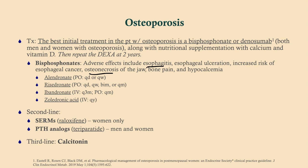Zoledronic acid (Reclast) is given once a year — convenient but more expensive. Second-line therapy includes raloxifene (women only) or PTH analogs like teriparatide (men or women). Calcitonin is third line. Denosumab is a RANK-L inhibitor that suppresses the mechanism that activates osteoclasts; the brand name is Prolia.